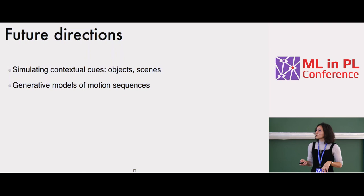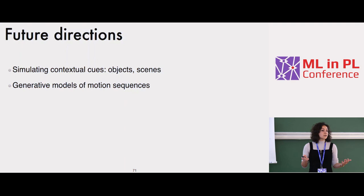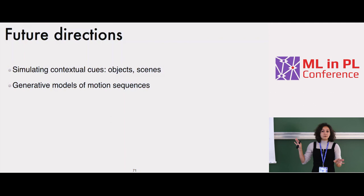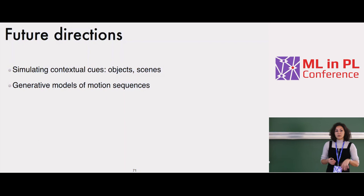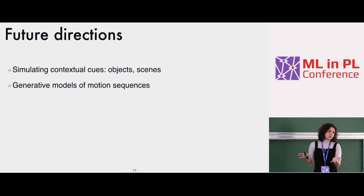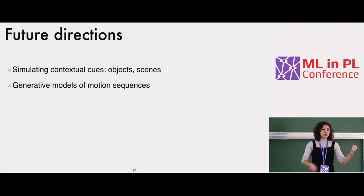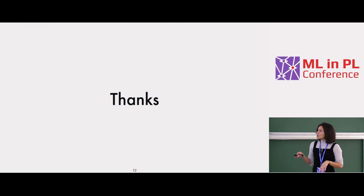Another future direction: our assumption was that body motion gives information about the action, but in YouTube videos, objects and scene context matter too — like the clothes for a ballet dance versus other dances. We only have body motions and randomize the rest, but with generative models we could simulate contextual cues. For example, playing violin without the violin in the scene would be difficult to predict correctly. With that, I'd like to conclude and take questions. Thank you.